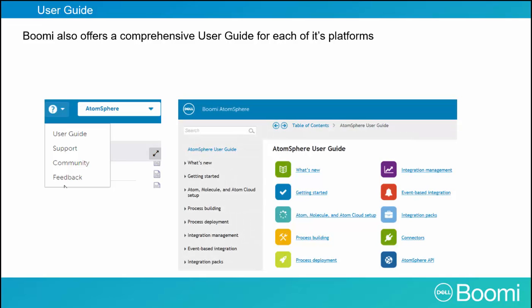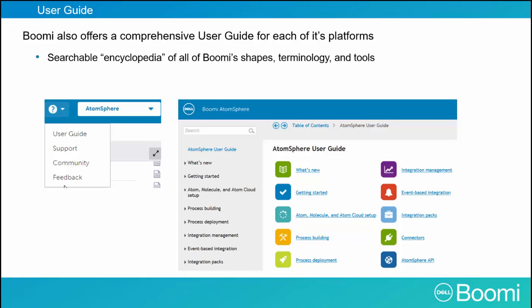Let's take a deeper look at the User Guide. Boomi offers a comprehensive user guide for each of its platforms. You can access each user guide by clicking the same link, but the platform changes depending upon what guide you are using, such as AtomSphere, MDM, EDI, etc. The user guide is basically a searchable encyclopedia of Boomi shapes, technologies, and tools. It's a great place to get started learning about particular shapes, and you can find it under the help dropdown icon.